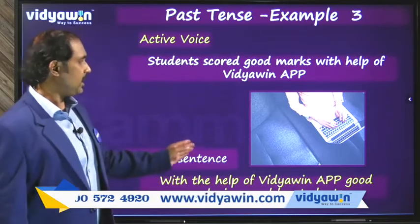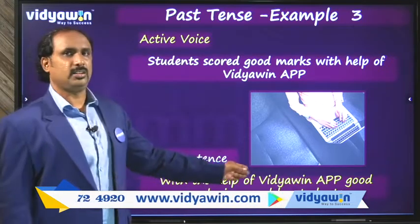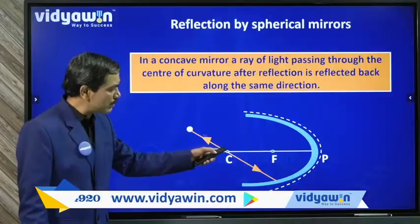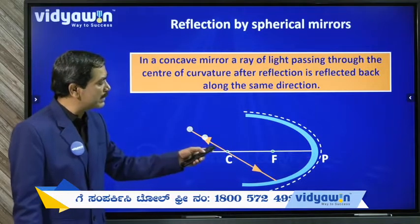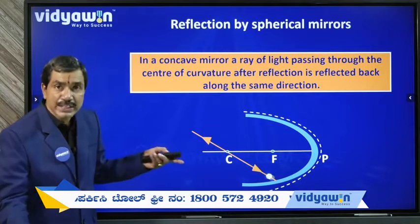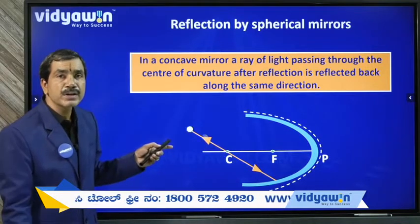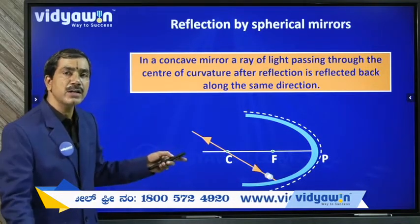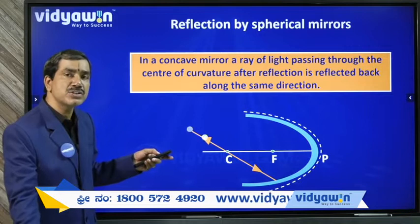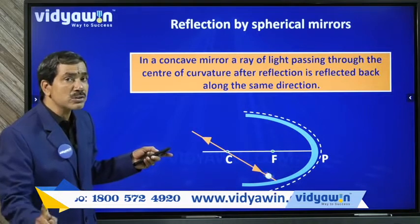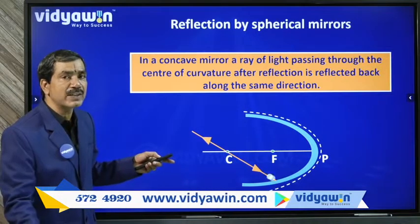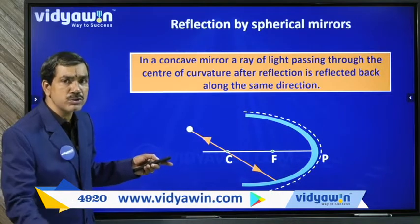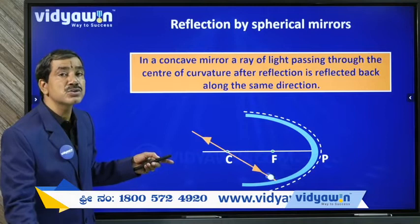A ray passing from this particular point to the mirror passes through C itself. Here, the angle of incidence is zero, so automatically the angle of reflection must also be zero.